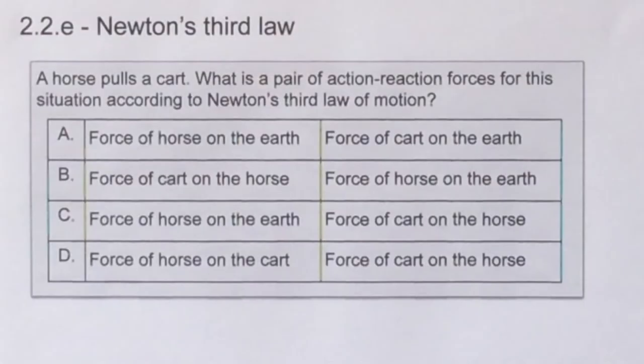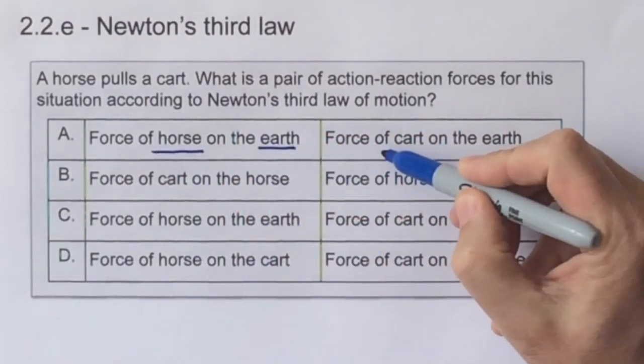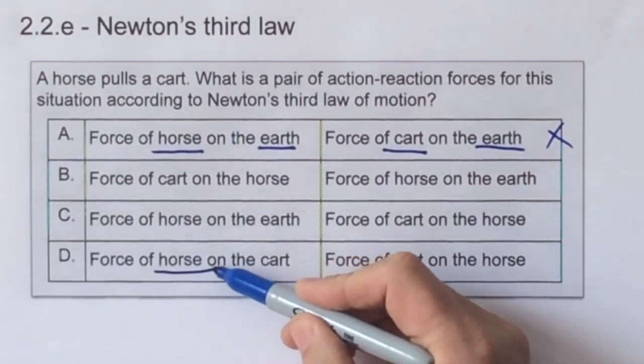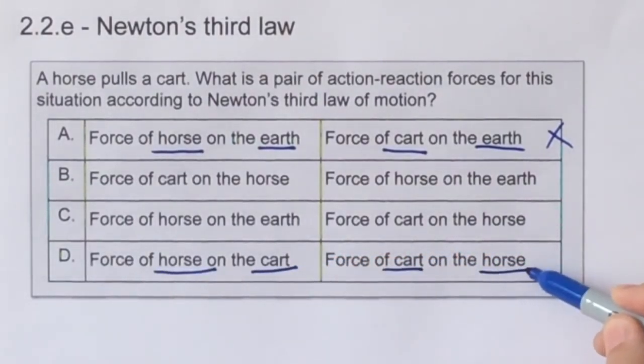As we know, forces always involve two objects — one which causes the force and the other which receives the effect of the force. Newton's Third Law involves the same pair acting on each other. Therefore question A is wrong, because there are three bodies involved. But we can see that D involves the horse and the cart, and then the cart and the horse, and that one is therefore correct.